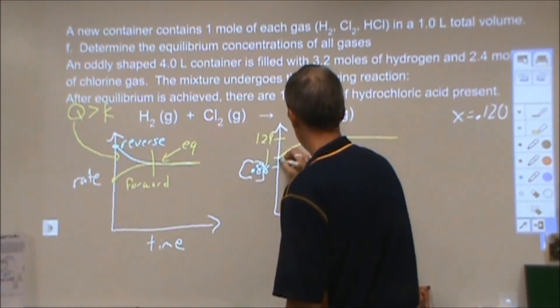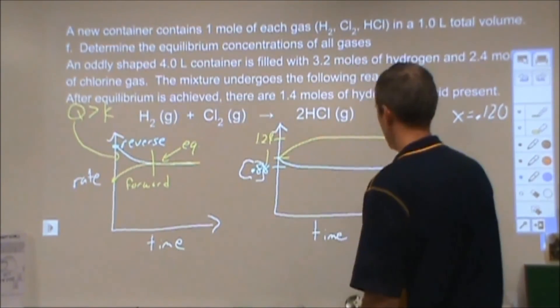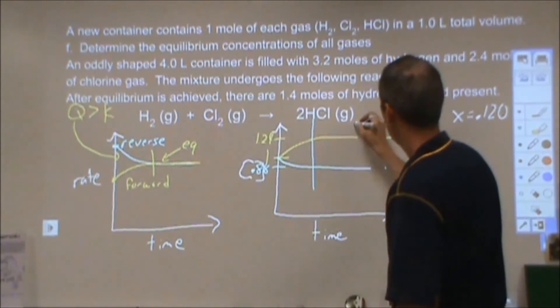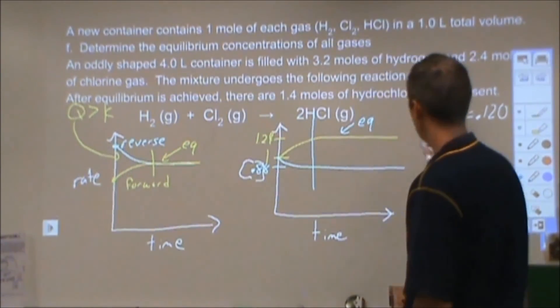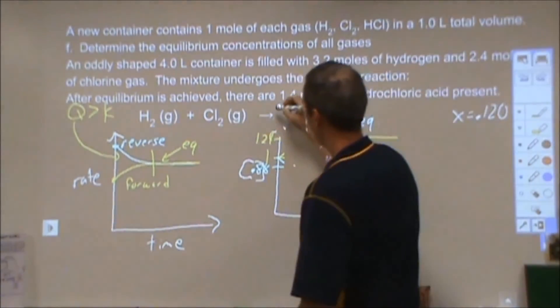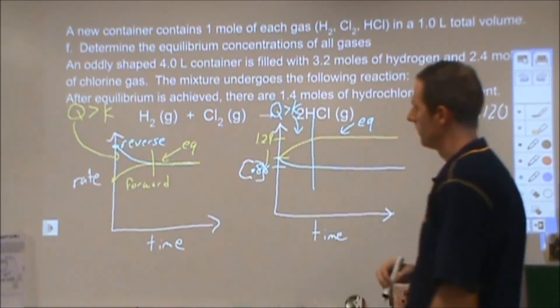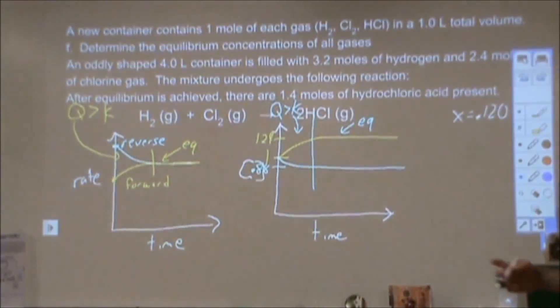And so we're starting at 1 and then it's going to drop. And again, we see that at a certain point where the lines level up, from that point forward we are at equilibrium. And before that point, we are where Q is greater than K. So that would be how you would construct a response for part G.